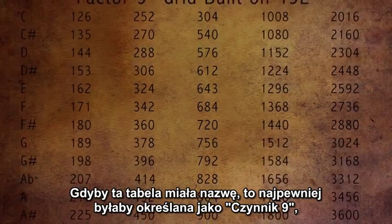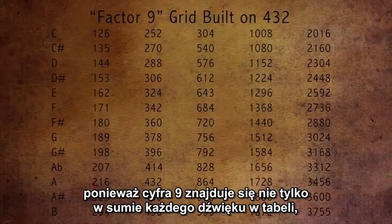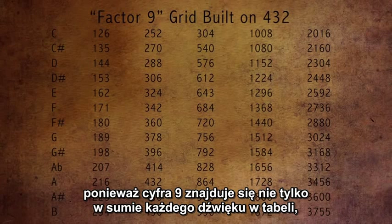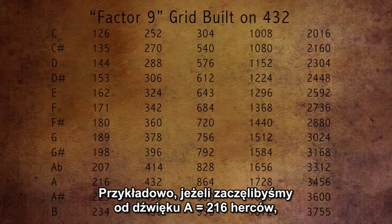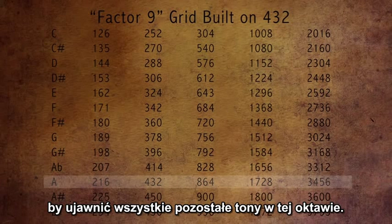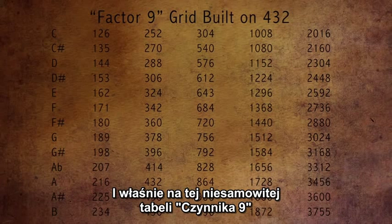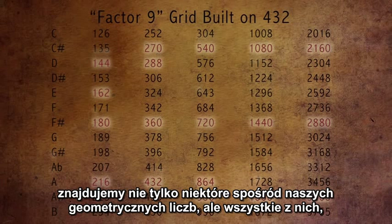This grid, if it had a name, would probably be called something like Factor 9, because the number 9 is found not only in the sum of every note on the grid, but also as the number required to move up or down the scale. For instance, if we started at note A at 216 cycles, all we would have to do is add or subtract the number 9 to reveal all the other tones in that octave. And it is here, on this incredible Factor 9 grid, that we find not just some of our geometric numbers, but all of them.